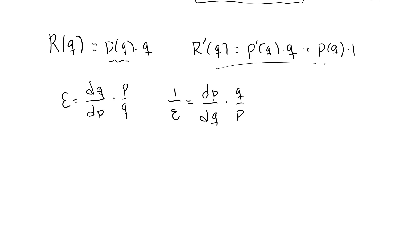So returning to this expression, I can do R prime of Q equal to P prime of Q times Q over P of Q times P of Q. I've just multiplied by P of Q and divided by P of Q, so that will make no changes to this expression, and then I have P of Q.